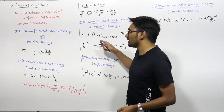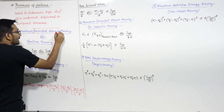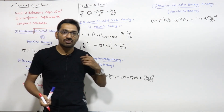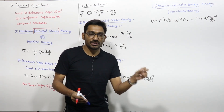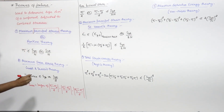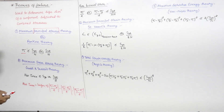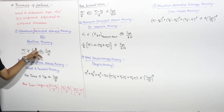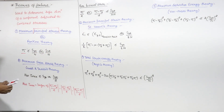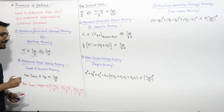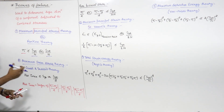The first one is the maximum principal stress theory, also known as Rankine's theory. Principal stress is the maximum normal stress induced in the member, that is sigma 1, and it occurs on the plane where shear stress is 0. The maximum principal stress theory states that sigma 1 should be less than or equal to SYT upon N, where SYT is the yielding strength in tension, or SUT by N for fracture. N is the factor of safety.